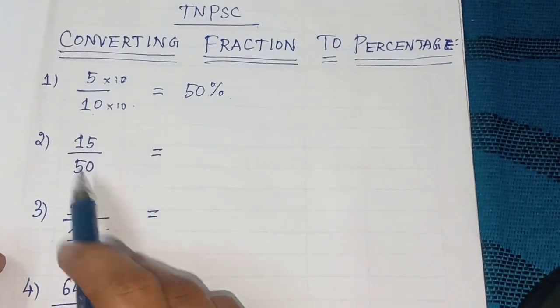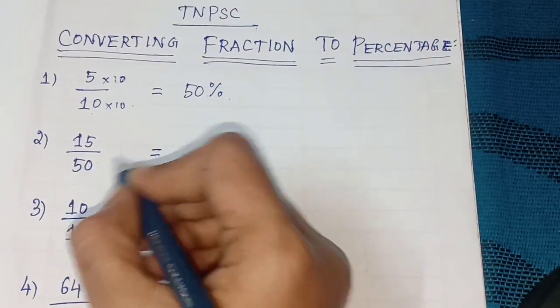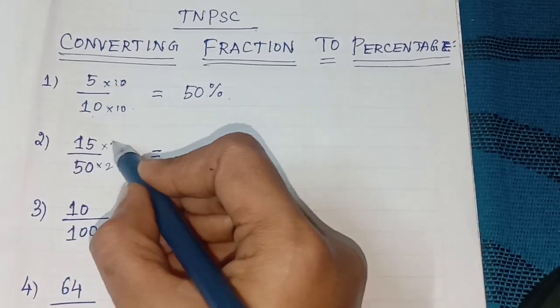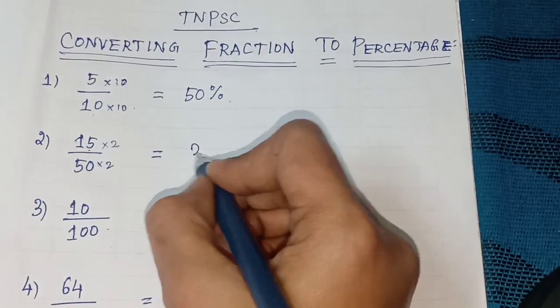Next, 15 divided by 50. To get 100 in the denominator, multiply by 2. Both numerator and denominator multiply by 2. So 15 into 2, 30 percentage.